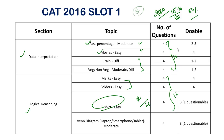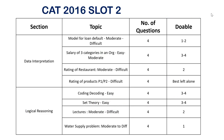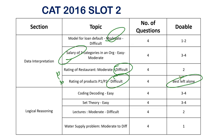Moving to CAT 2016 Slot 2 — the story was similar but a little bit tougher. In DI, salary of three categories was calculation-based, default loan was also calculation-based. Rating of restaurants was damn difficult — a lot of cases and possibilities were involved, requiring a lot of combinations to understand. These two tough sets were best left alone.